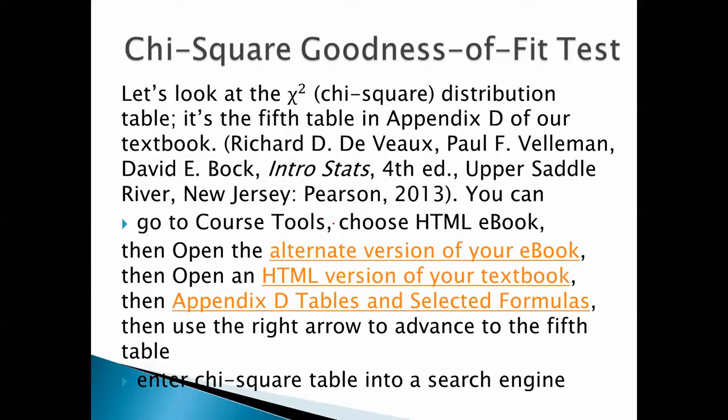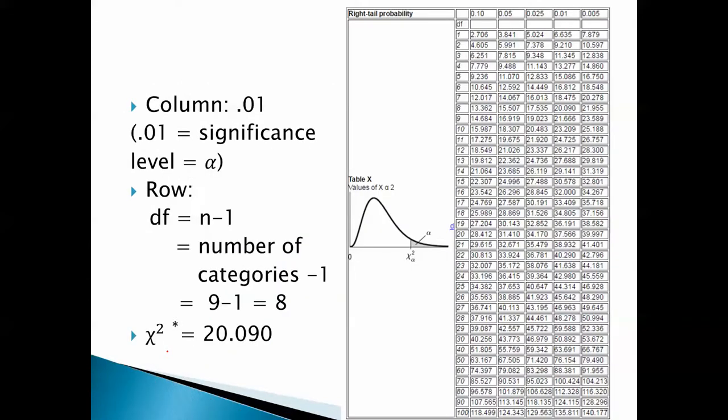So we look at the chi-square distribution table at the back of the book, or you can enter chi-square table into a search engine. Here's what you end up with. Now again, we want to be really, really sure before we haul these people before a judge. So we're going to set 0.01 as the level of significance. So we want this column. The row is the degrees of freedom. That's the number of categories minus 1. So that's going to be 8. So we want this row. So it looks like our entry is 20.090. So that's what we get for chi-squared star. That's our critical value of chi-square.